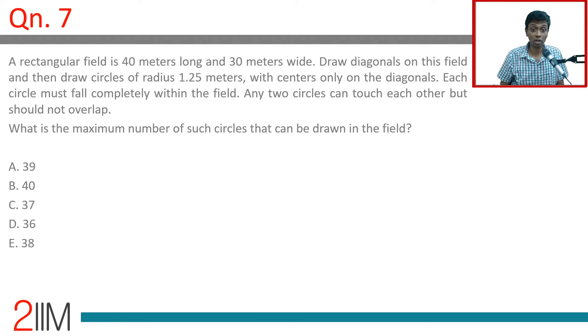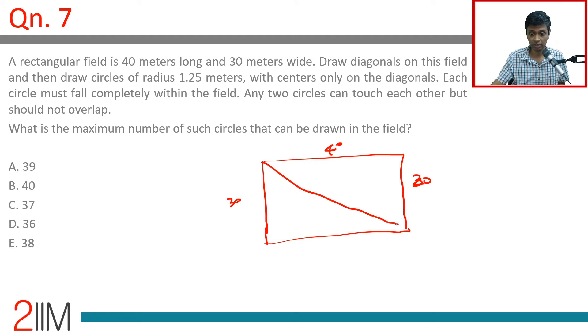A rectangular field is 40 meters long and 30 meters wide. Draw diagonals on this field - 50 meters long, that much we know. So, 30 and 40, draw diagonals and then draw circles of radius 1.25 meters with centers only on the diagonals, some diagonal here.